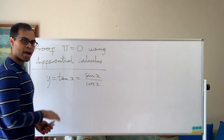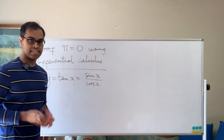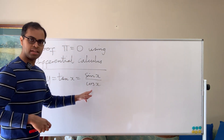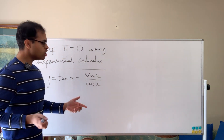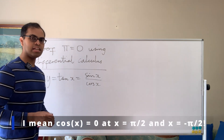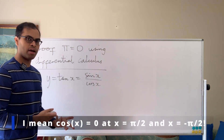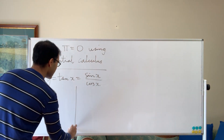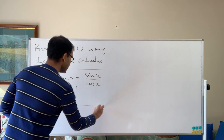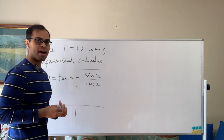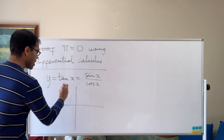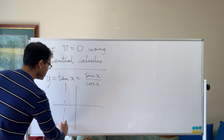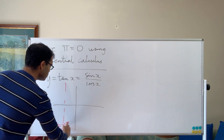Here we have the function y equals tan x, which is sine x over cosine x. We know that when the denominator is zero, the function is undefined. Cosine x is zero at pi over two and negative pi over two, so we can use this to draw the graph of tan x. We notice vertical asymptotes at negative pi over two and positive pi over two — this is when the denominator is zero.